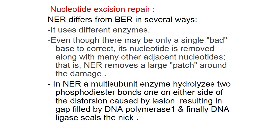Nucleotide excision repair differs from base excision repair in several ways: it uses different enzymes like UVRA, UVRB, and UVRC. Even though there may be only a single bad base to correct, that nucleotide is removed along with many other adjacent nucleotides — nucleotide excision repair removes a large patch around the damage. A multi-subunit enzyme hydrolyzes two phosphodiester bonds, one on either side of the distortion caused by the lesion, resulting in a gap filled by DNA polymerase I, and finally DNA ligase seals the nick.